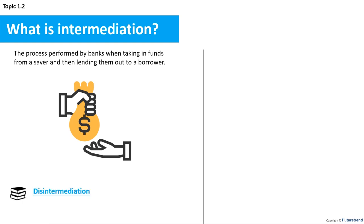Disintermediation is where lenders and borrowers interact directly. An example of this is when a company looking to raise funds to invest in a start-up sets up a crowdfunding website to promote itself or its product, to find investors willing to lend money for rewards.